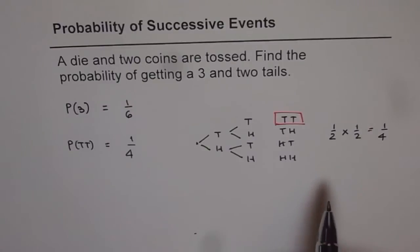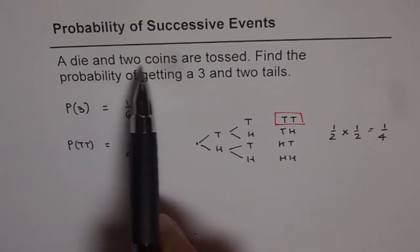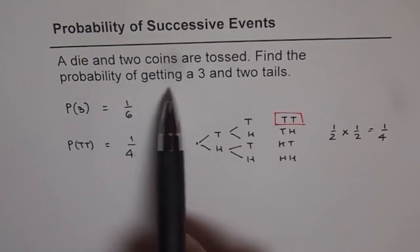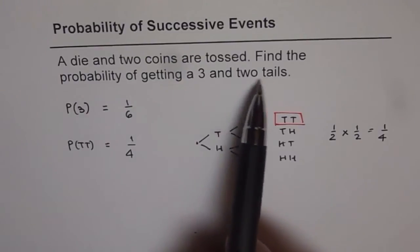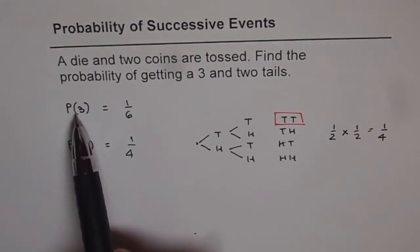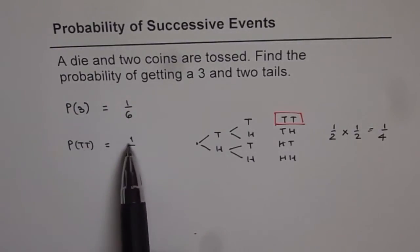Now we'll use all these concepts to answer the question. A die and two coins are tossed. Find the probability of getting a 3 and two tails. So you get 3 from the die. The probability of getting 3 is 1/6 and then getting two tails is 1/4.